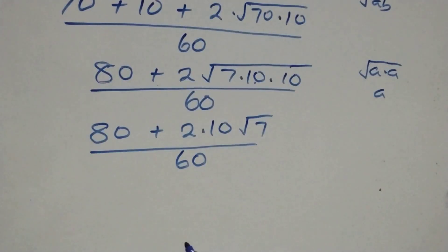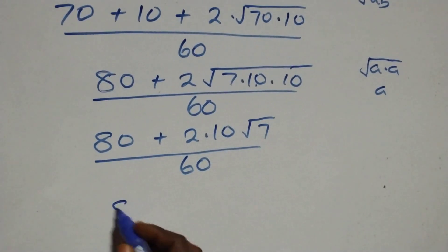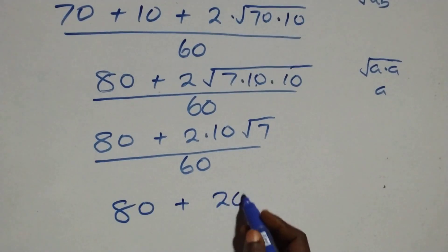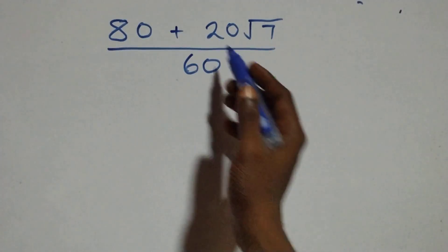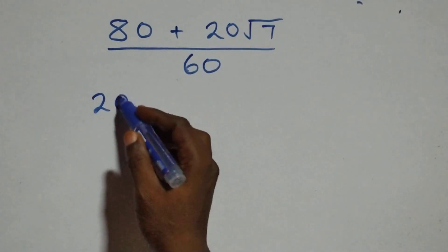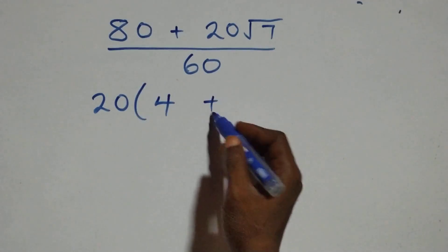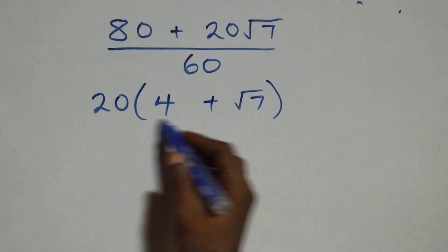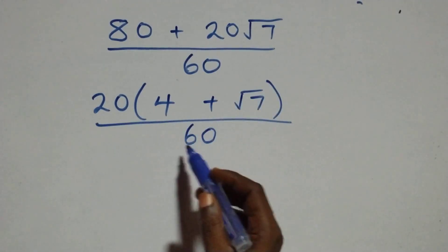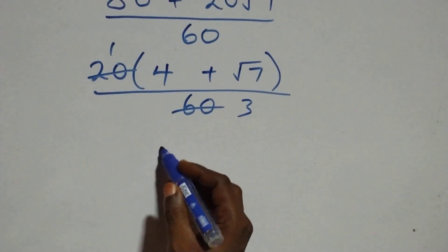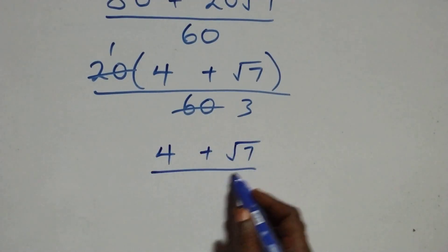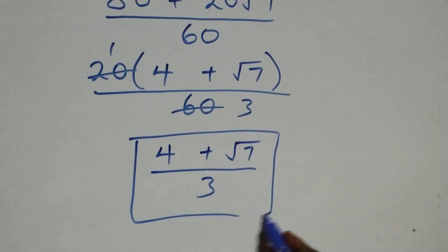This gives us 80 plus twenty root seven, all over sixty. Twenty is a common factor, so we factor it out: twenty into brackets four plus root seven, all over sixty. Twenty goes into sixty three times, giving four plus root seven over three — the same result as the first method. Thank you for watching.